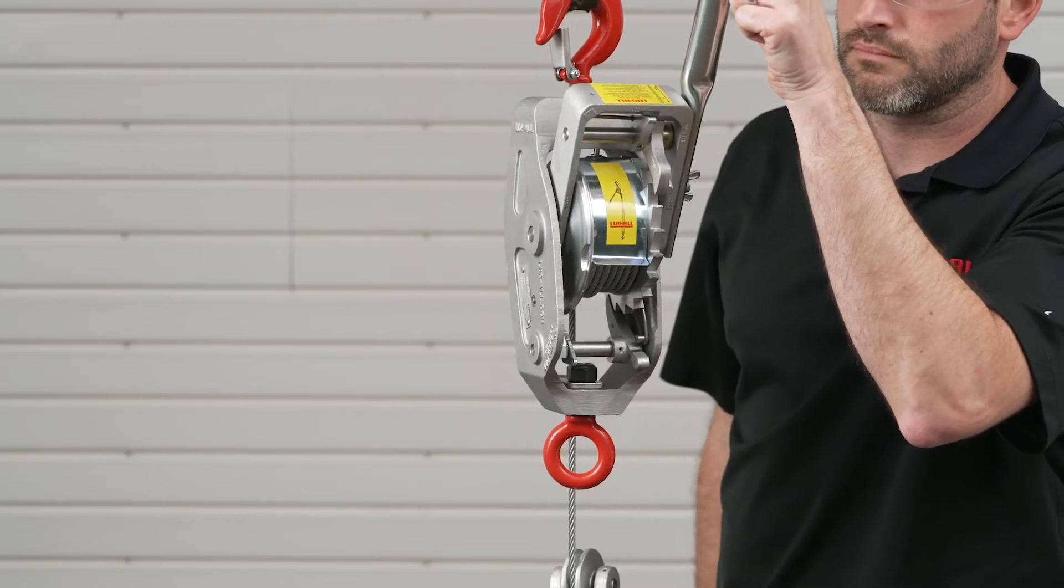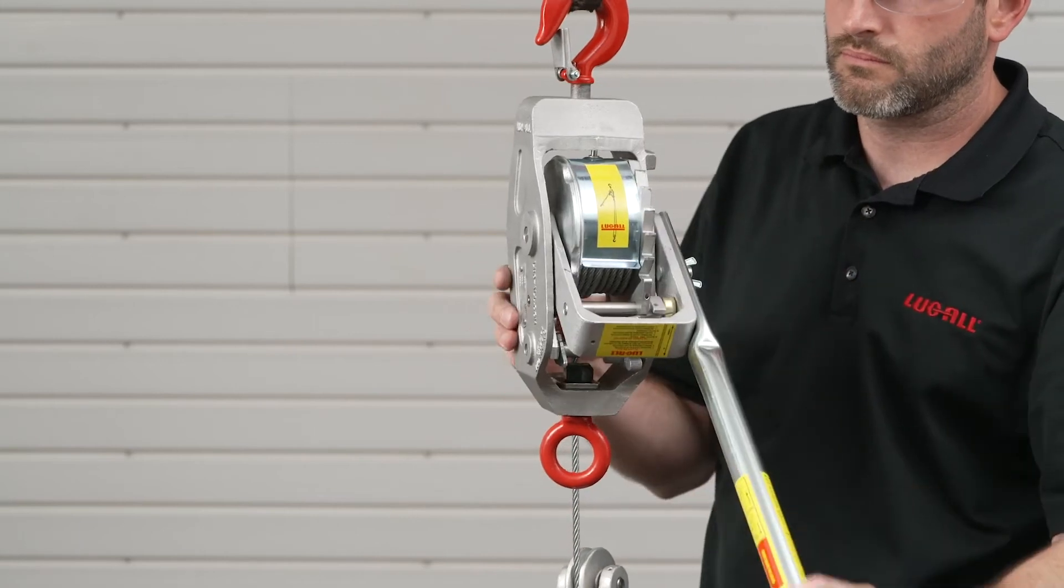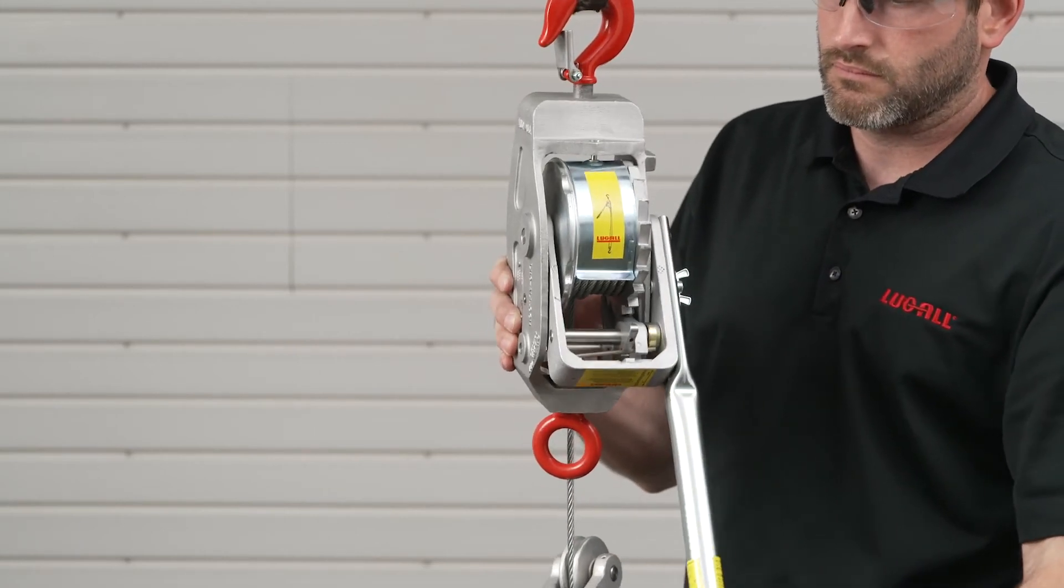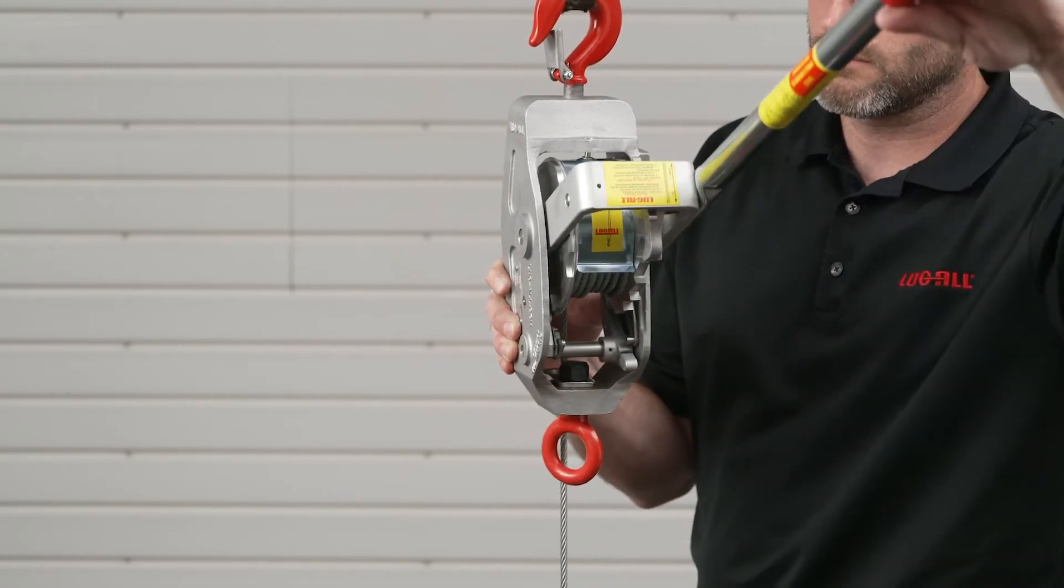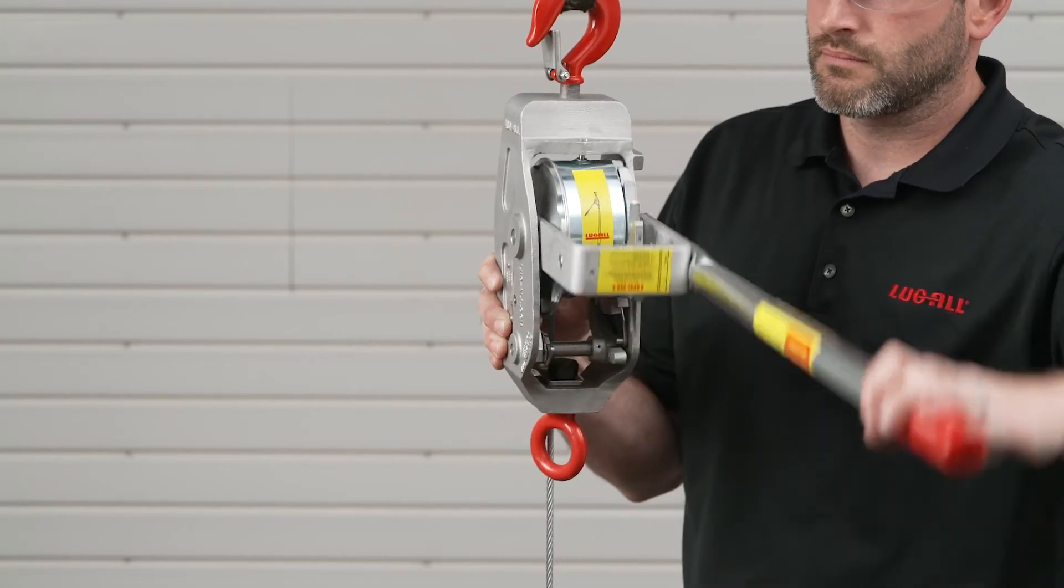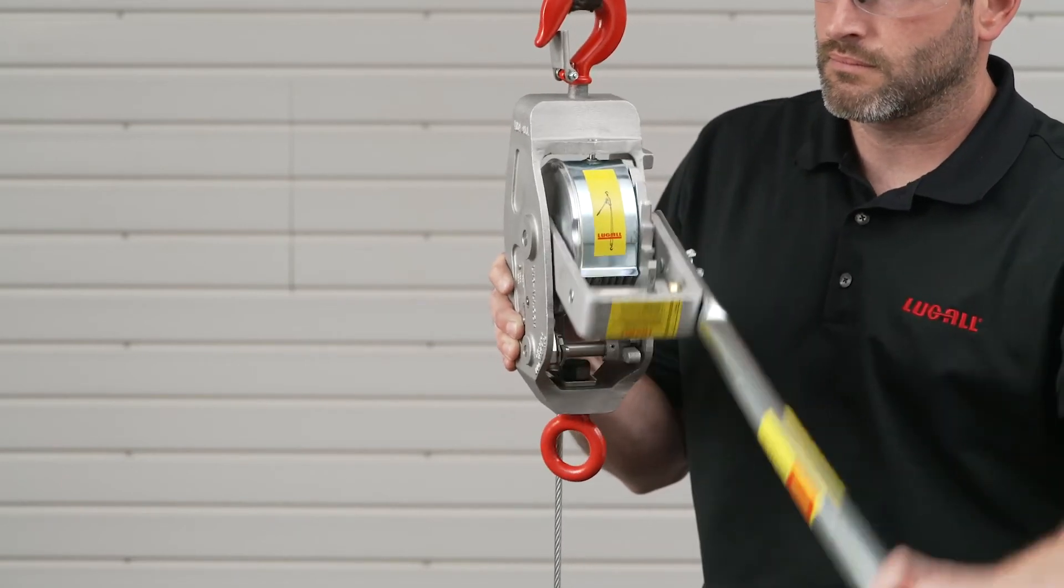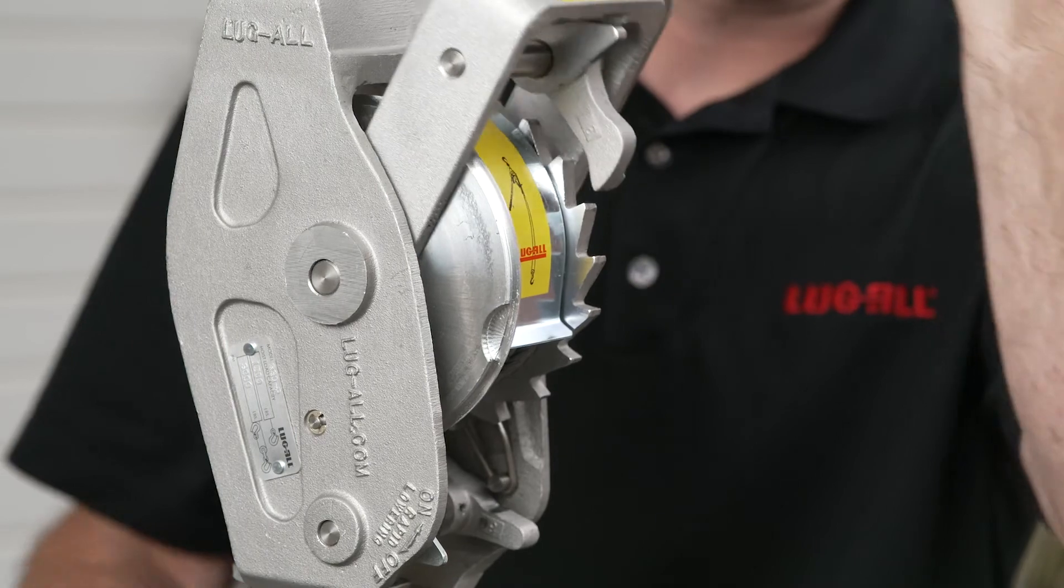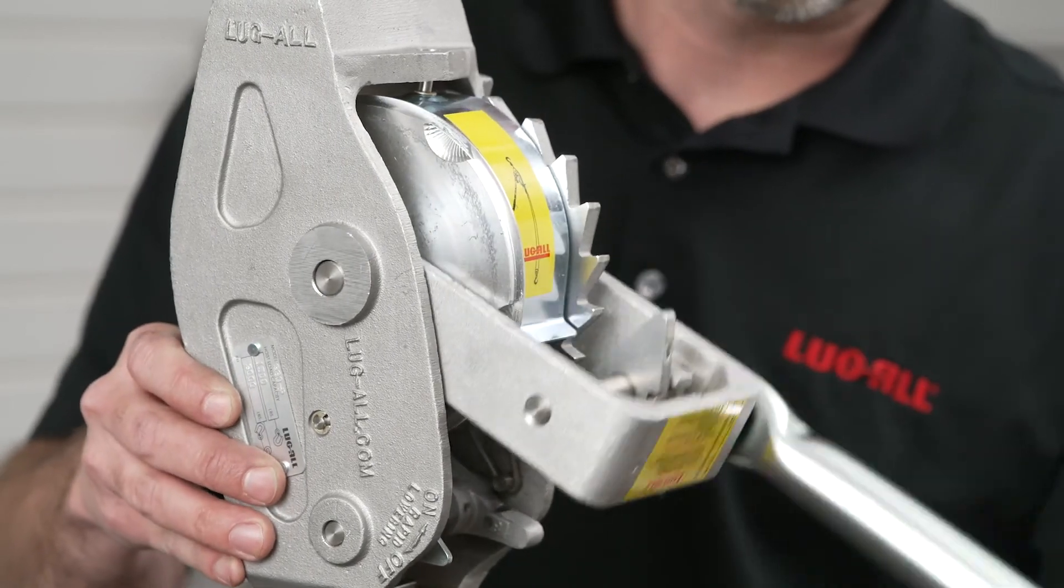With the rapid lowering switch on, move the handle until the U-frame pawl engages the mainframe pawl spring. Apply additional pressure to release the mainframe pawl. Rapid lowering mode requires the handle to travel the full length of the arc.